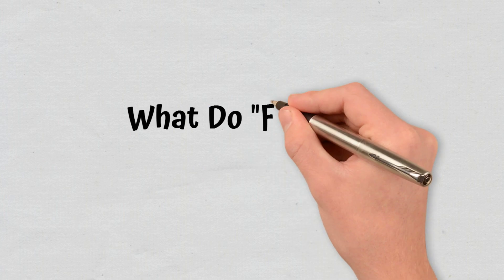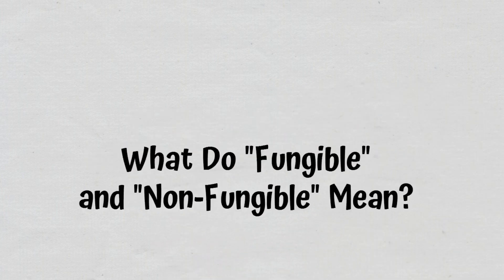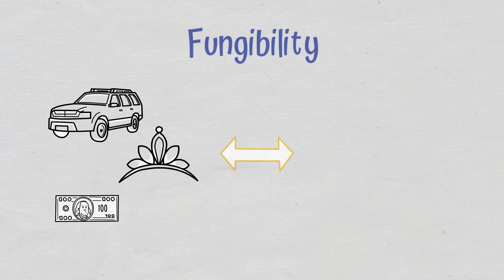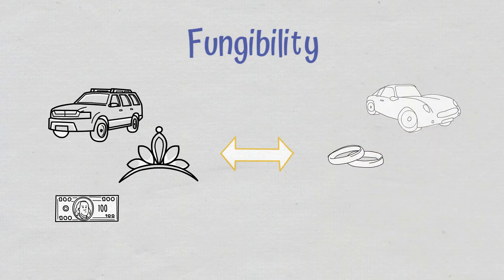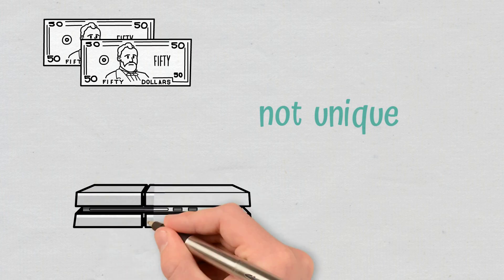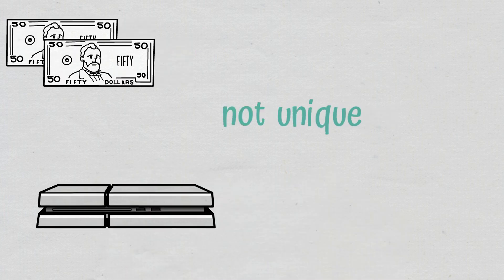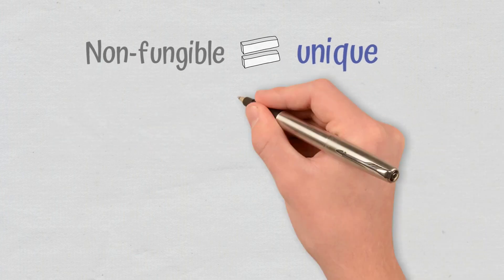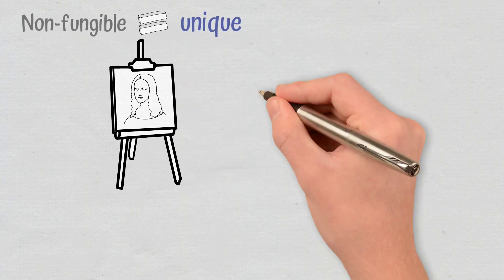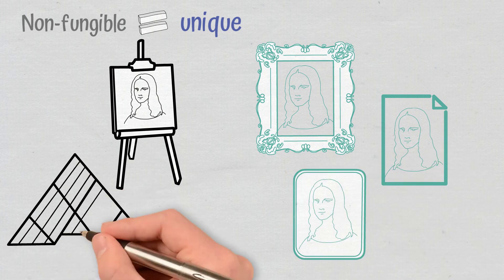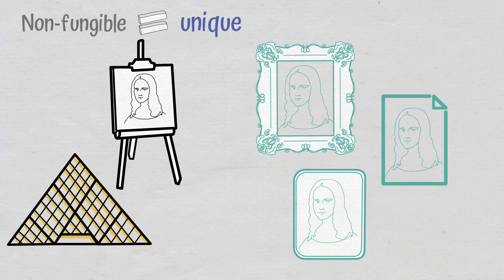What do fungible and non-fungible mean? Fungibility is the ability of a good or asset to be interchanged with another individual asset of the same type, quality, or quantity. In other words, fungible goods are not unique, which is also the case of a banknote or a serial product. On the other hand, a non-fungible good is something unique. Let's take Leonardo da Vinci's Mona Lisa, for example. No matter how many copies and posters are made based on it, the original painting is one and therefore nothing else could replace it.